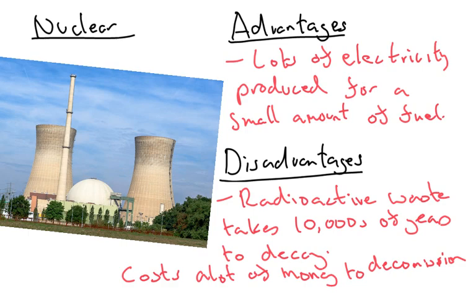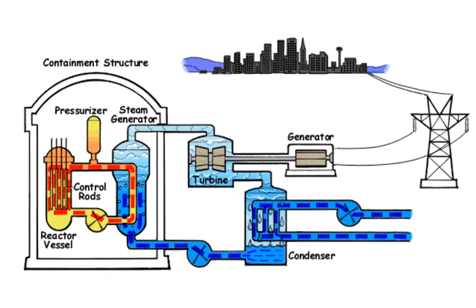This is a diagram of how a nuclear power station works. It works very similarly to a coal, oil and gas power station, except instead of burning a fuel, inside the containment structure these rods are heated due to nuclear fission going on with uranium. The heat gets transferred into the water, which turns into steam. Just like the coal, oil and gas power stations, that turns a turbine, the turbine turns a generator, and that produces electricity. The rest of the water gets recycled back round.